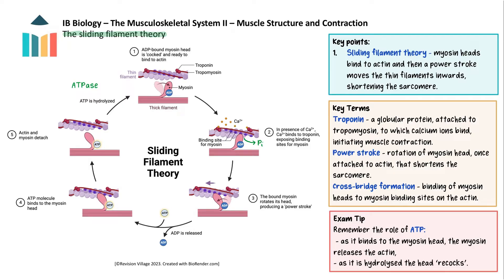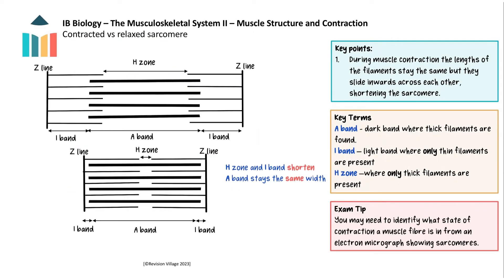Muscle contraction continues until there are no longer calcium ions present to expose the binding sites for the myosin heads. During muscle contraction the lengths of the thin and thick filaments remain the same — they just slide inwards across each other. This brings the Z-lines closer together, so as a result the I-band and the H-zone get narrower. However, since the A-band refers to the region where the thick filaments are found and the thick filaments do not physically change length, the A-band stays the same width.